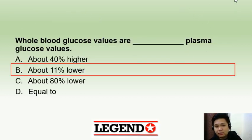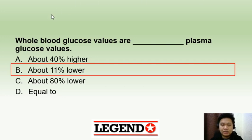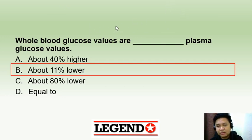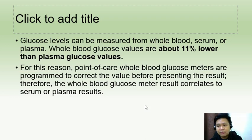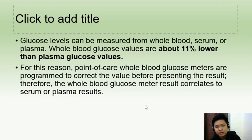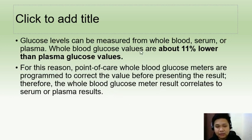Whole blood glucose values are about 11% lower than plasma glucose values, according to Bishop. Using Henry, this would be a range of 10% to 15% lower than plasma glucose levels. This is important because point-of-care tests for glucose usually use whole blood. As a result, whole blood glucose will be lower than plasma glucose values, but POCTs automatically correct for this prior to presenting the result.